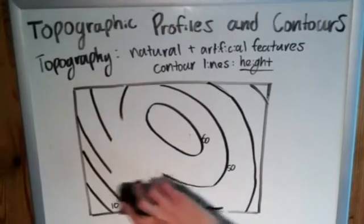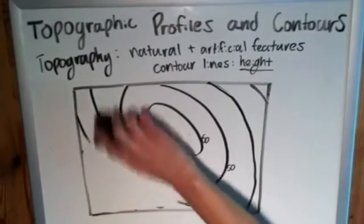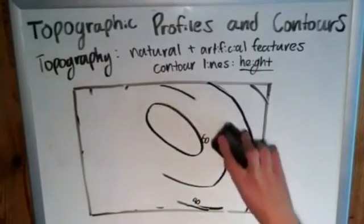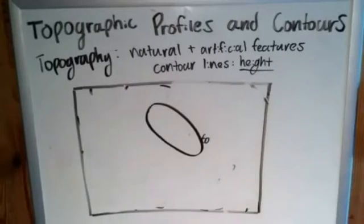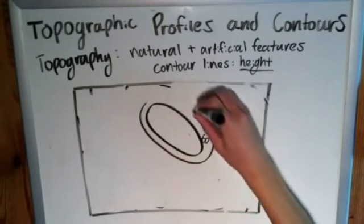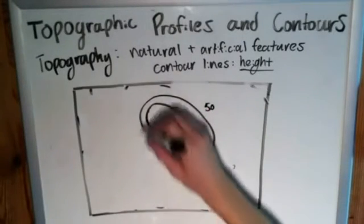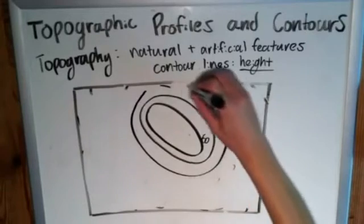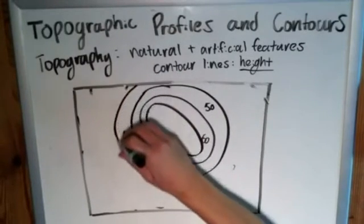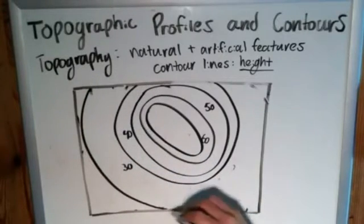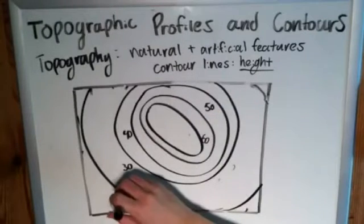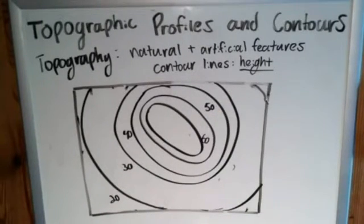If we wanted a hill that looked more like that, then we could edit this picture. Let's say we keep 60 right there. So if we keep 60 there, let's say 50 is right there, barely any distance between them. Then let's say 40 is like that. And then 30 is like that. But then 20, let's say, is more like that.